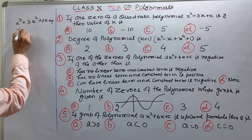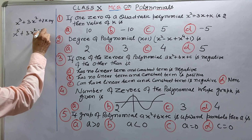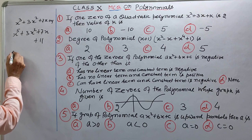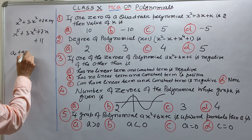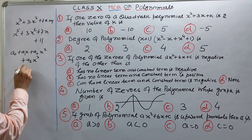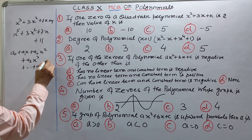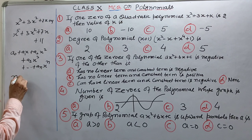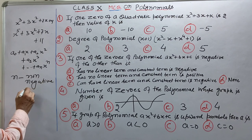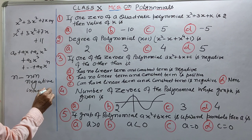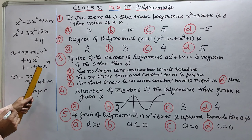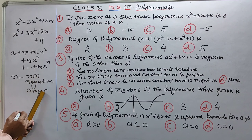Yani x ki different powers mein diya hota hai. Aur a x ki power hai — agar hum isko is tarah se likhein: a0, a1x, a2x square, a3x cube and so on. Kitni bhi power ho sakti hai, lekin yeh jo power hai yeh non-negative integer hona chahiye. Jab bhi aapse pucha jaye ki what is polynomial, toh expression of this type is called polynomial, if n is a non-negative integer.